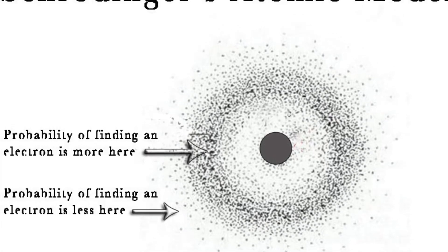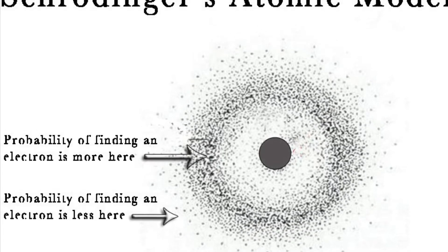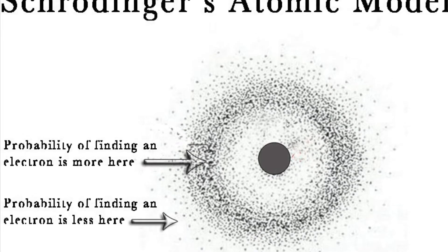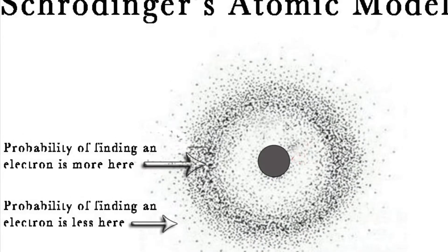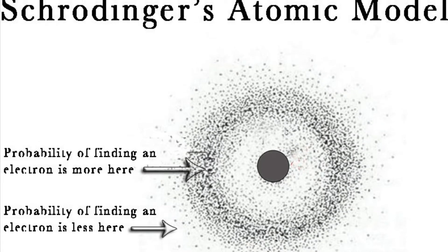If electrons were just particles, measuring their locations would be relatively simple. However, because of the electron's wave-like nature, the exact location of electrons cannot be pinpointed. Instead, we can calculate the probability that the electron is located in a certain place.